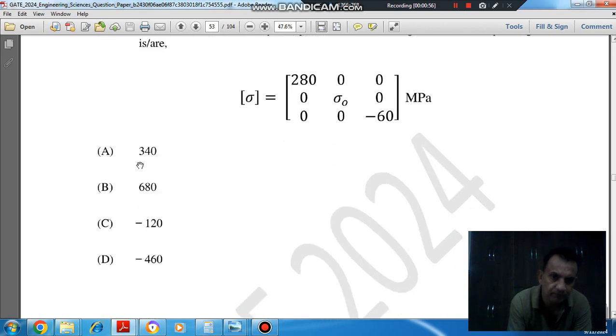Option A: 340. Option B: 680. Option C: minus 120. And option D: minus 460.